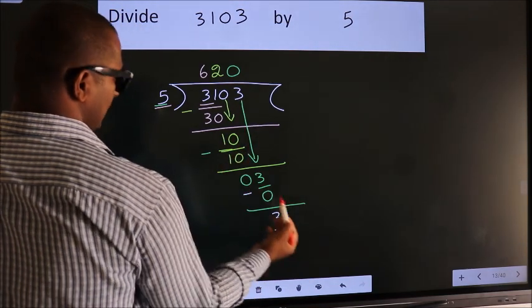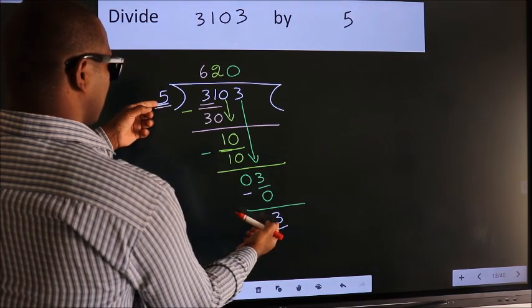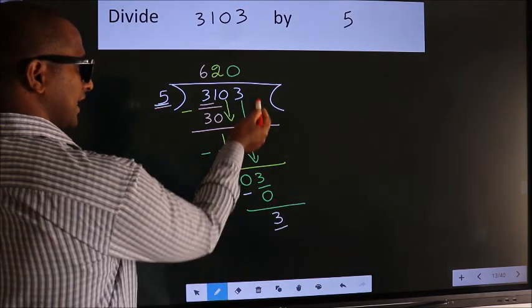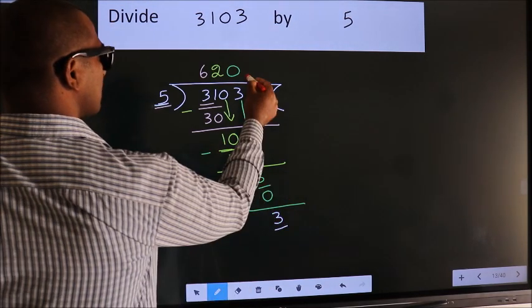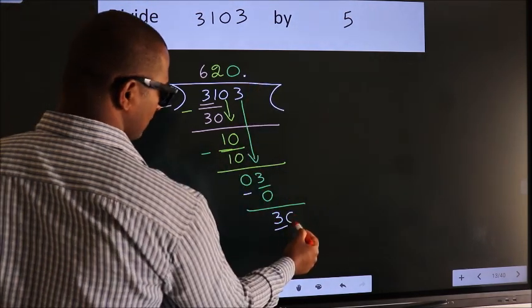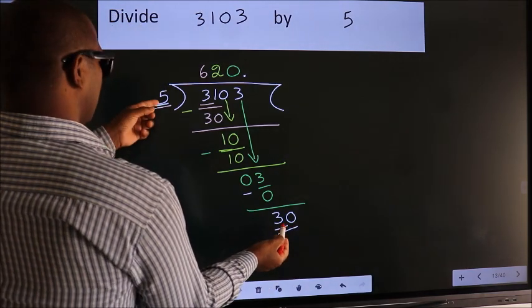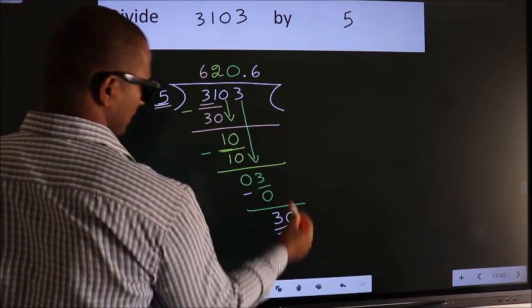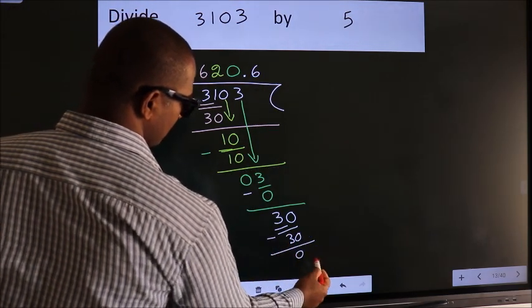Now here we have 3, here 5. 3 is smaller than 5, and we did not bring any number down. So now we can put dot and take 0. So 30. When do we get 30 in the 5 table? 5×6=30. Now we subtract, we get 0.